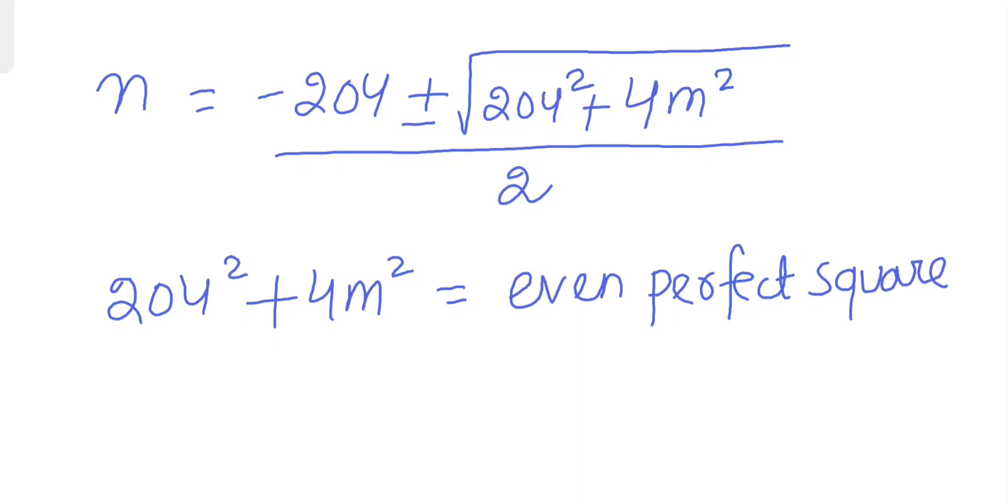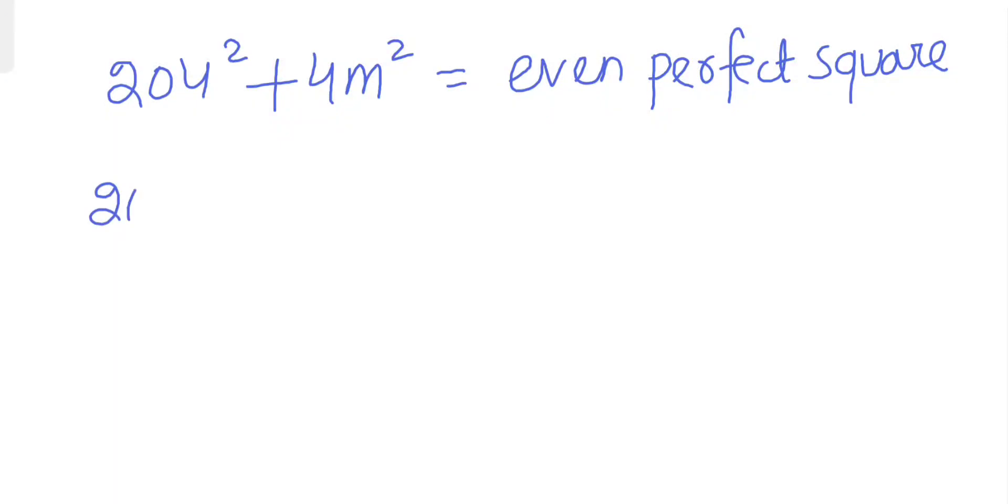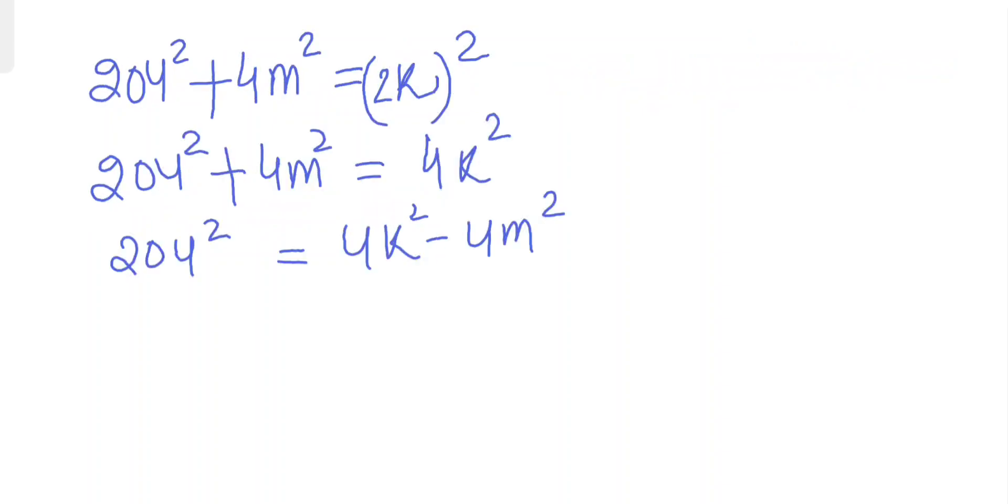Let's assume that 204² plus 4n² will be some number, say k². k is a positive even perfect square. Therefore, this is 102² equals k² minus n².